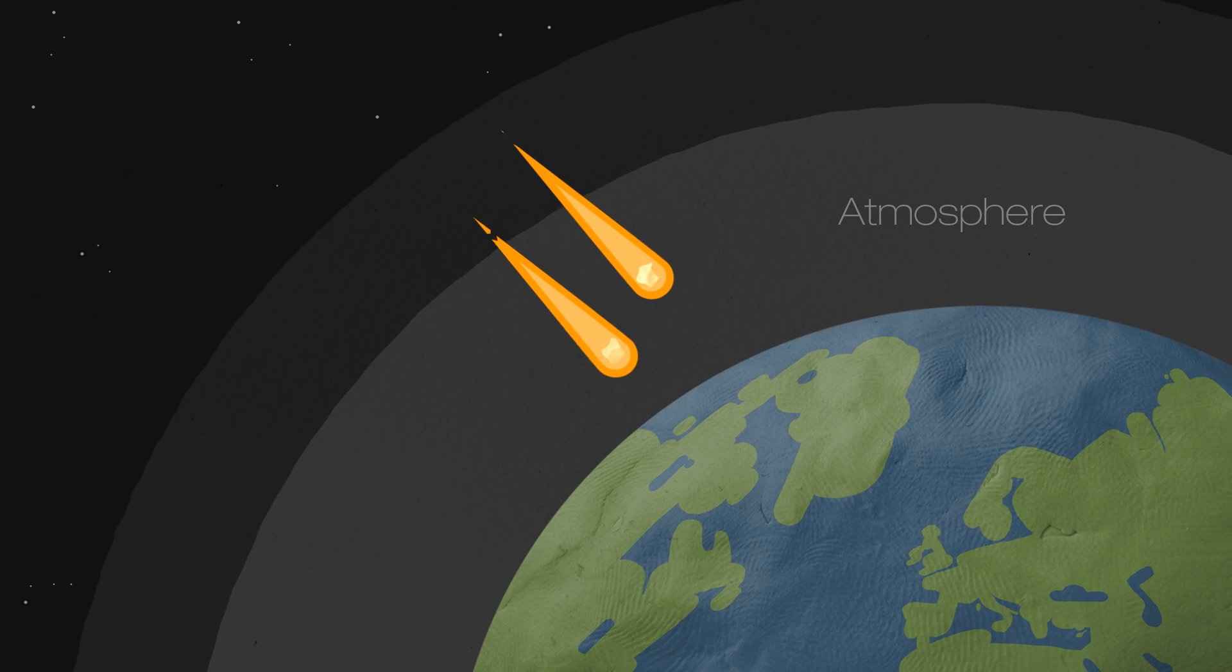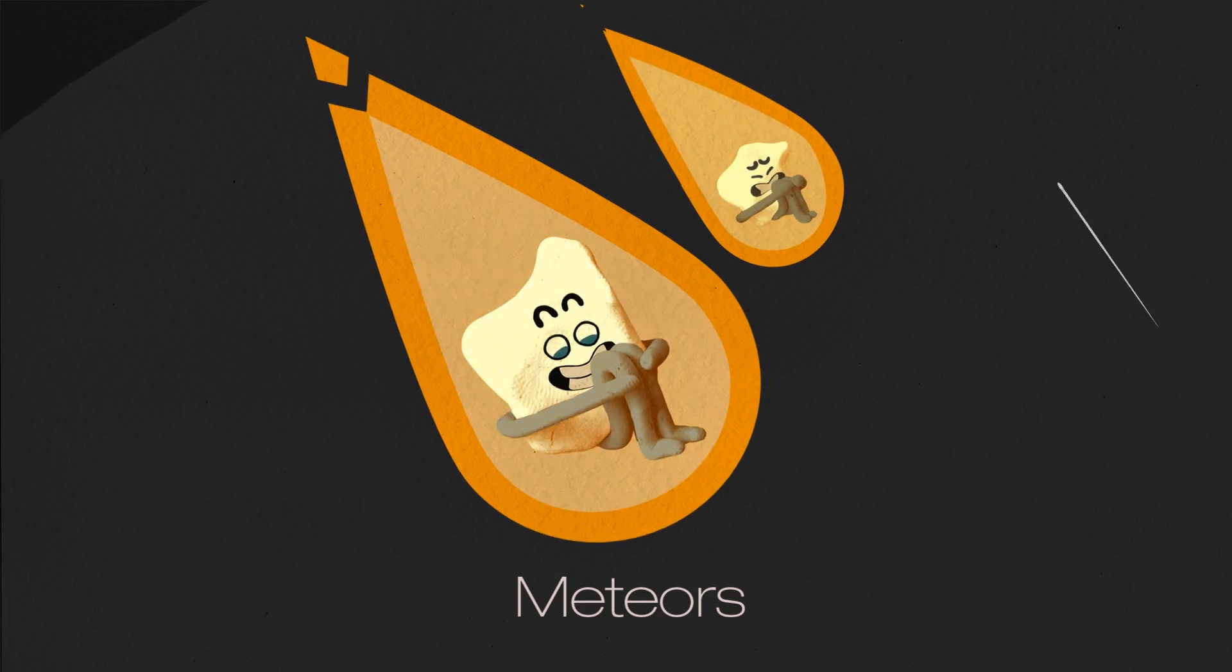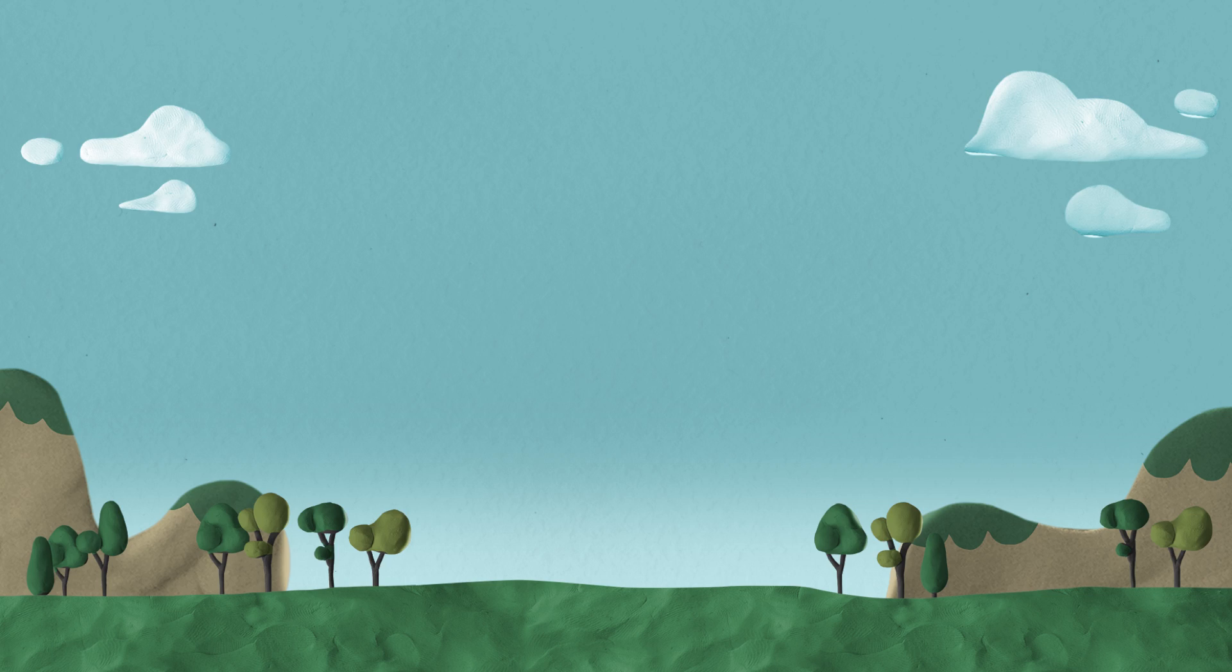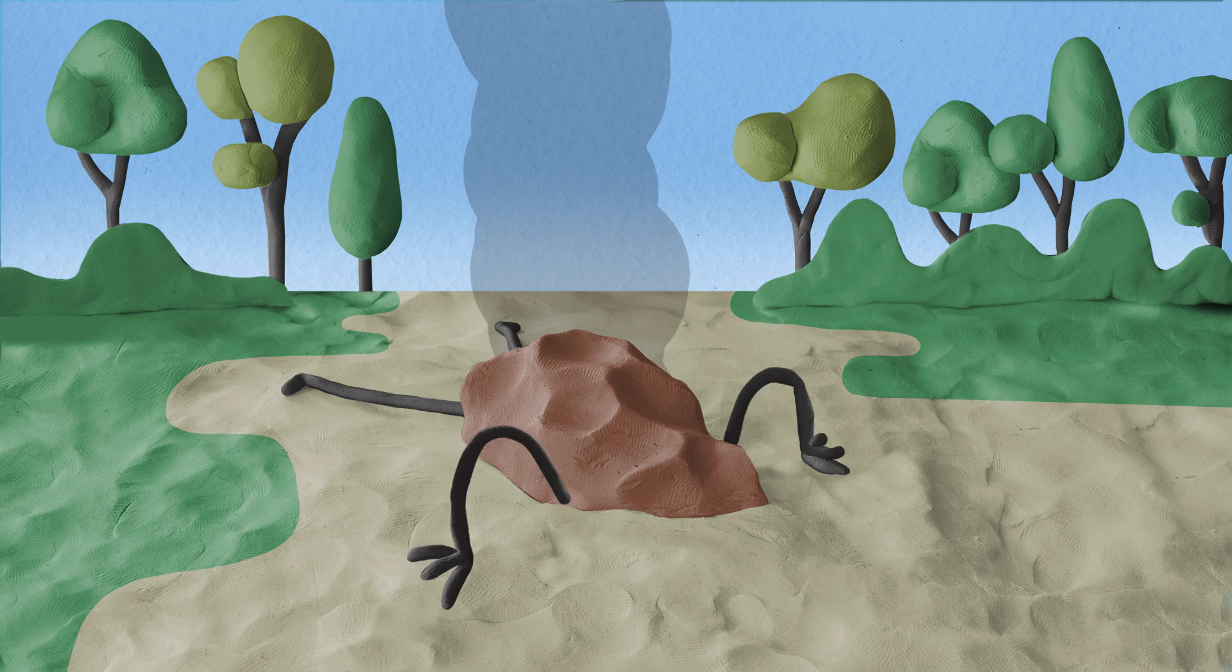And when they fly through the Earth's atmosphere they are called meteors. If they manage to survive their burning descent through our atmosphere and land on Earth, we call them meteorites.